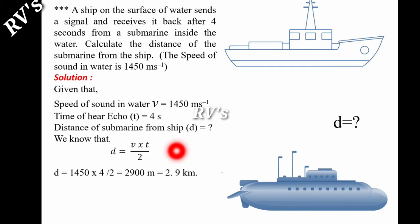For example, a ship on the surface of the water sends a signal and receives it back after 4 seconds from a submarine inside the water. Calculate the distance of the submarine from the ship. The velocity of sound in water is different from the velocity of sound in air. This is 1450 meters per second in water, whereas in air this is 340 meters per second.